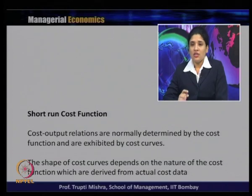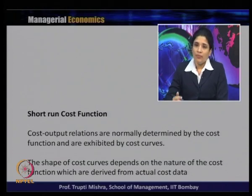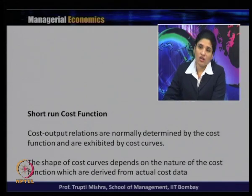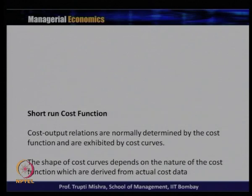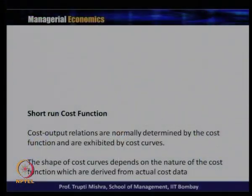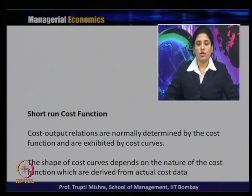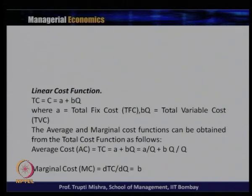To summarize: average cost and marginal cost, and average product and marginal product are related in an inverse way — whenever marginal/average product is increasing, marginal/average cost is decreasing. Marginal cost equals average cost at the minimum point of average cost. Cost and output relationship are normally determined by the cost function, and the shape of the cost curve depends upon the nature of the cost function derived from actual cost data. We will talk about three different kinds of cost function, specifically in case of the short run cost.